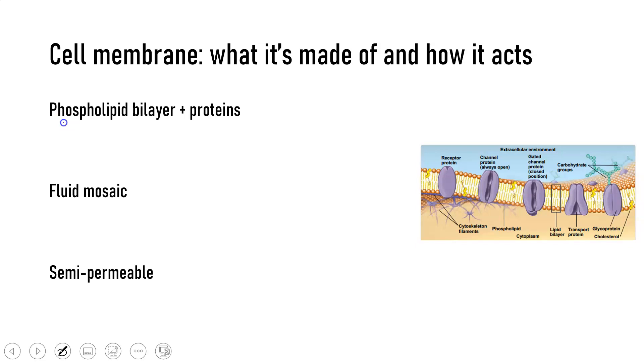A cell membrane, like we said, is a phospholipid bilayer. But that's not the only thing it's made of. It also has proteins stuck in and on the membrane. They may be on the surface, stuck in the middle, or stuck on the inside.